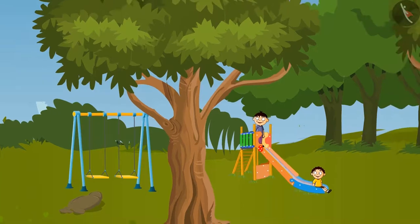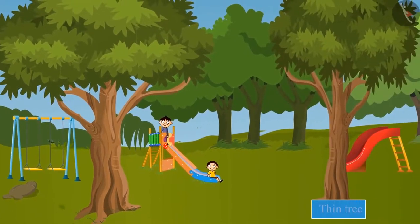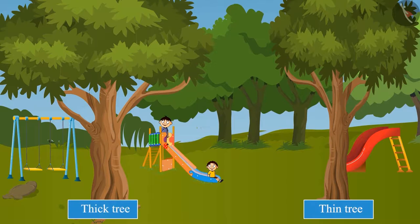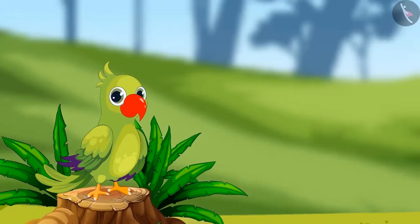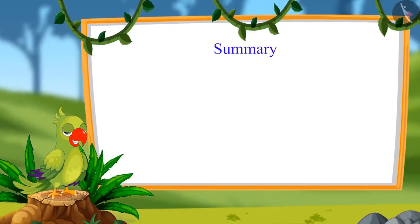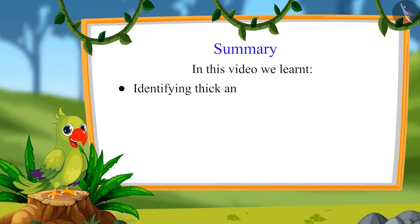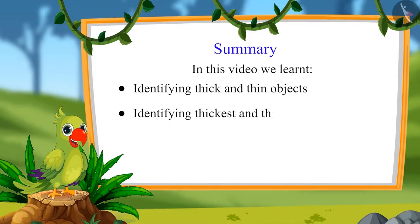So children, did you see? Chotu could not hide behind the thin tree but could easily hide behind a thick tree. That was all for today. In this video we learned identifying thick and thin objects, and identifying the thickest and thinnest objects.